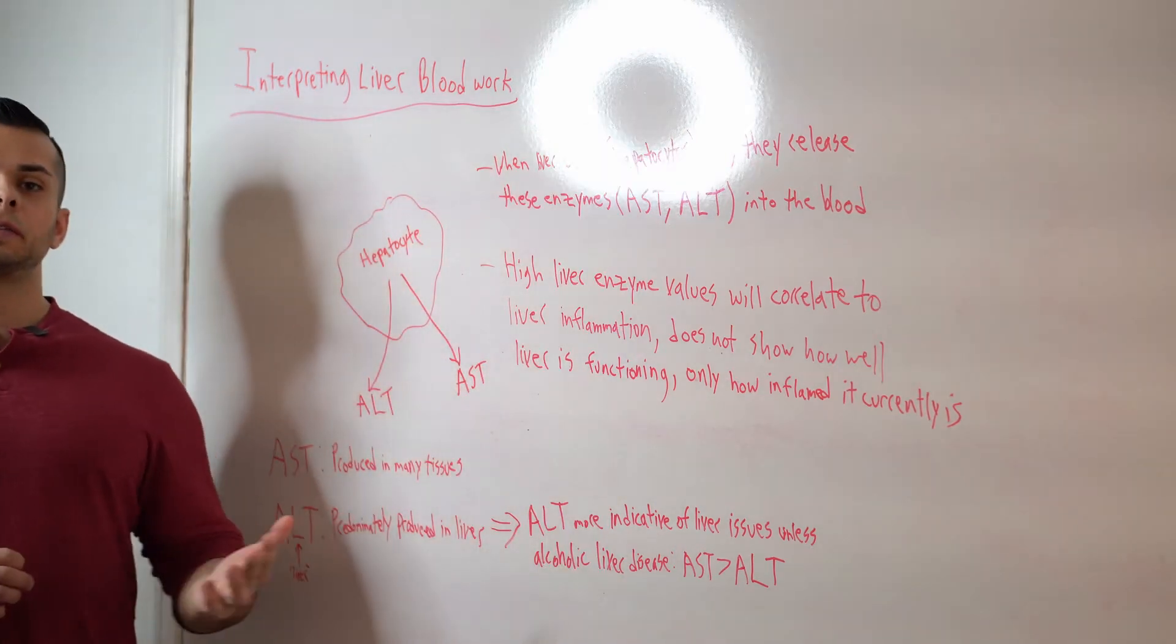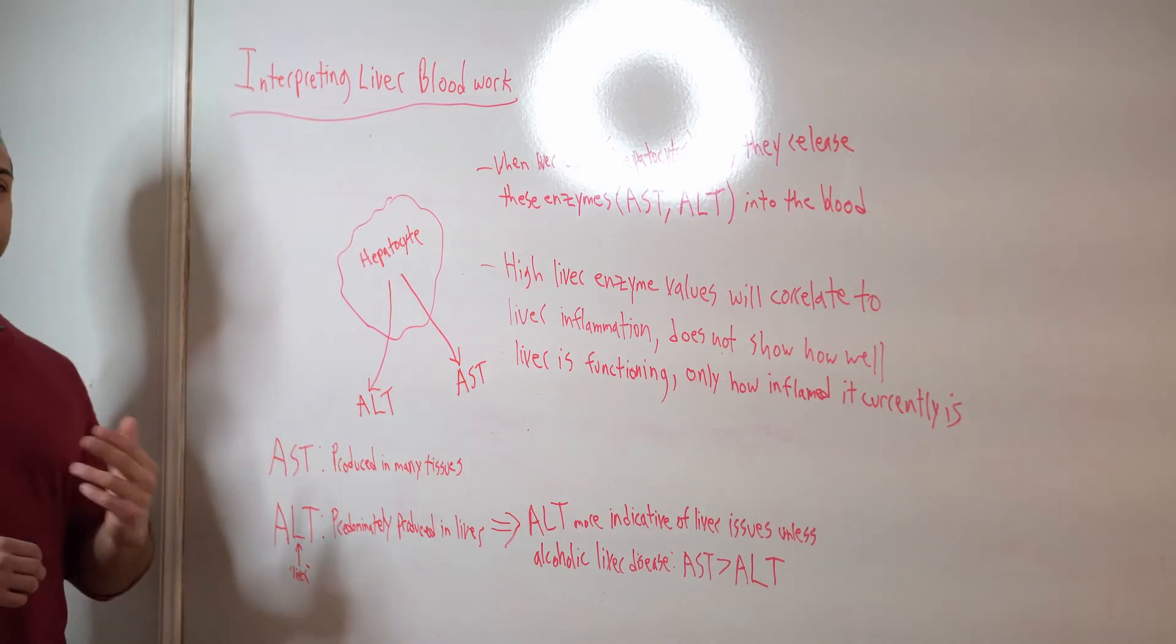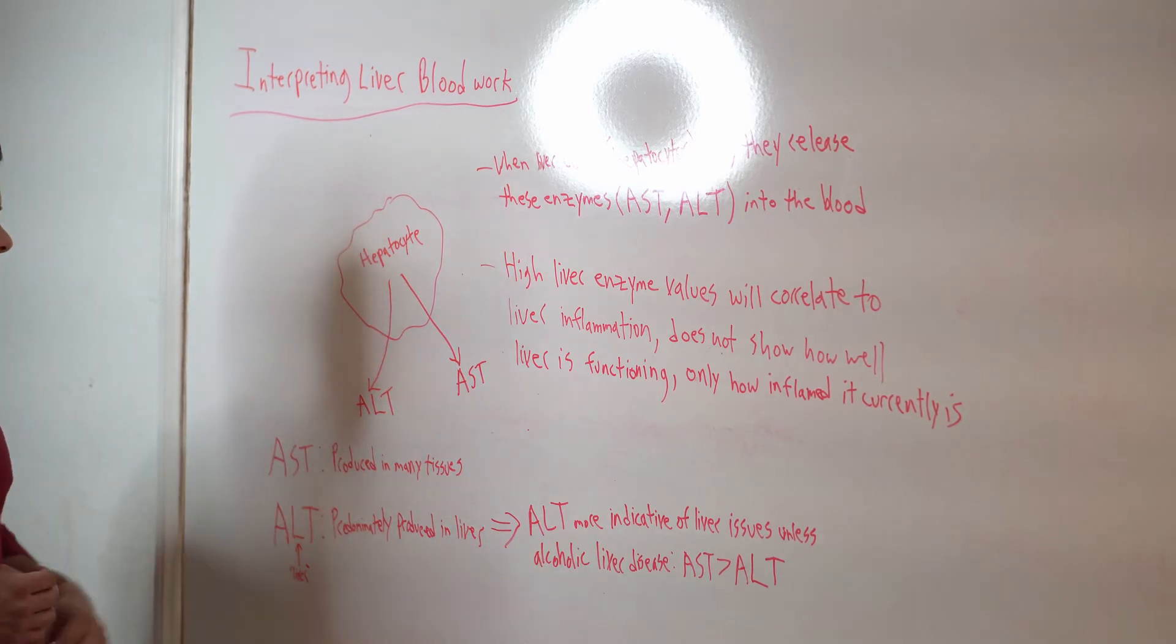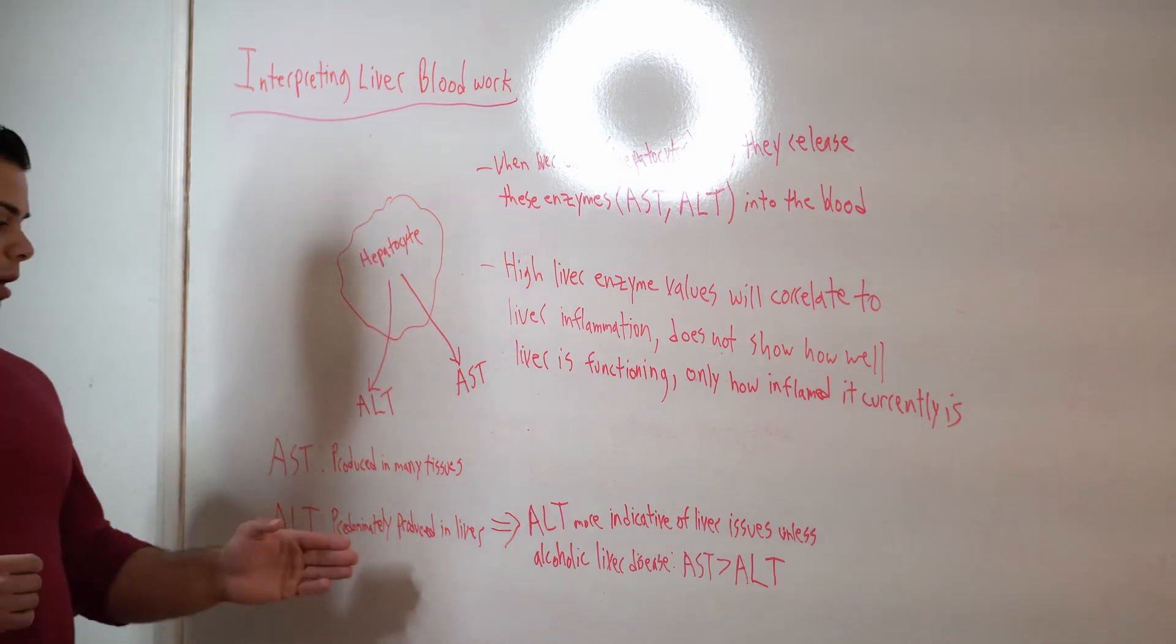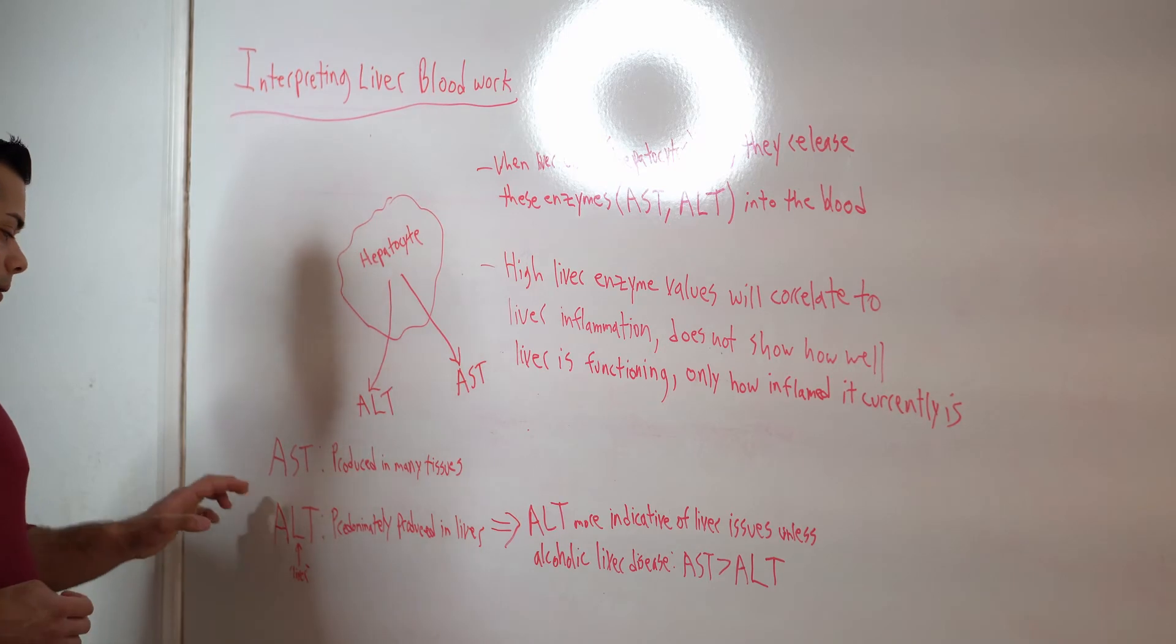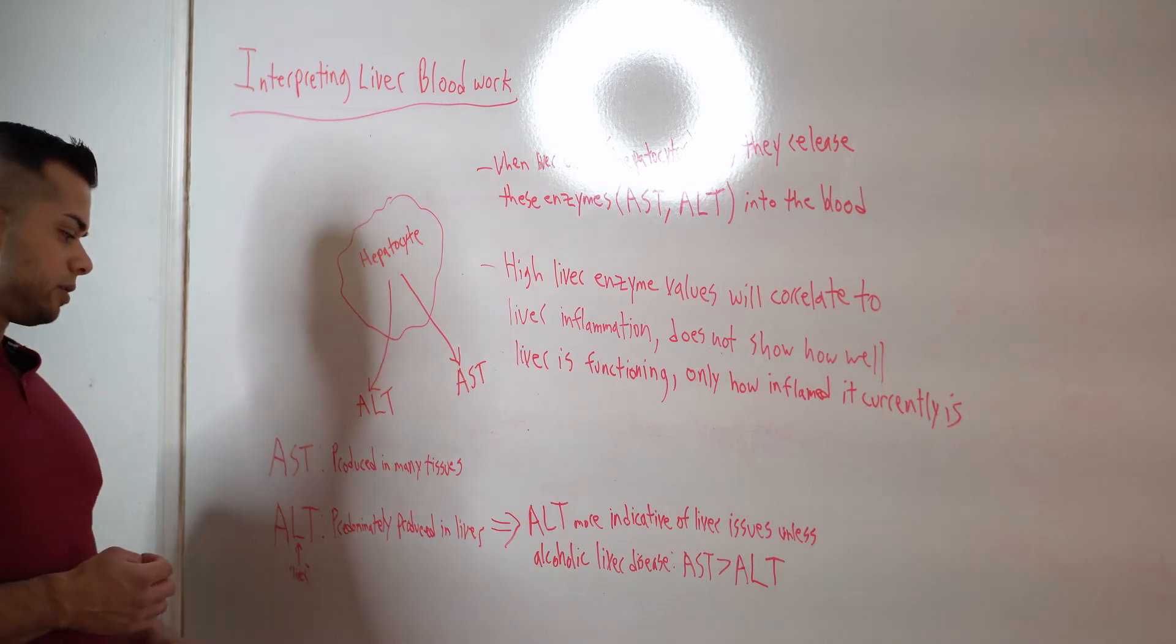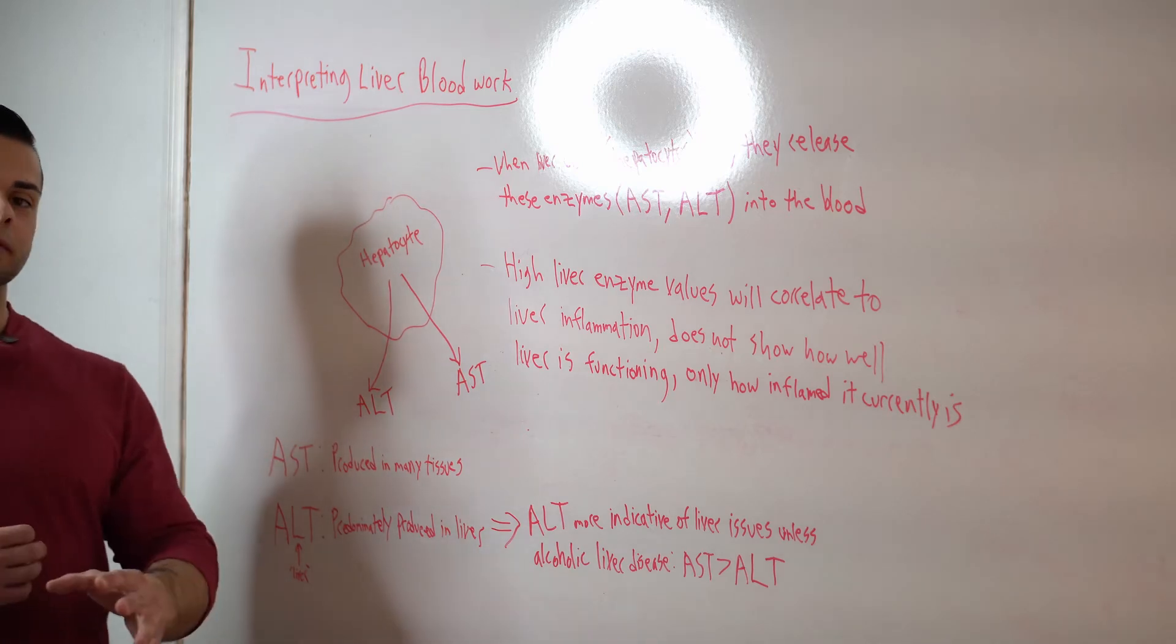So whenever it comes to specific blood work interpretation, we usually look at AST and ALT. So an important thing to notice about the difference in these two is that AST is actually produced in many tissues in the body, while ALT is predominantly produced in the liver. And we can remember this by the fact that ALT has an L in it. We can say L reminds us of liver to remind ourselves that ALT has more association with the liver.